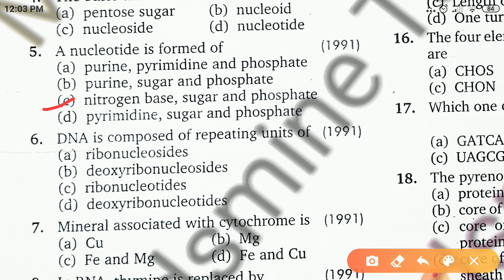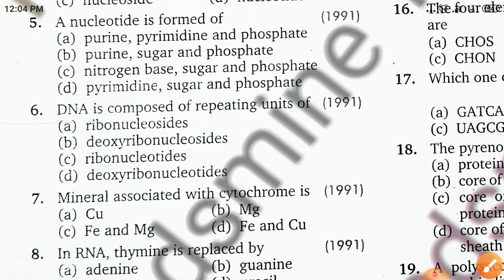The next question is: DNA is composed of repeating units of — ribonucleoside, deoxyribonucleoside, ribonucleotides, or deoxyribonucleotides. The right answer is deoxyribonucleotides.